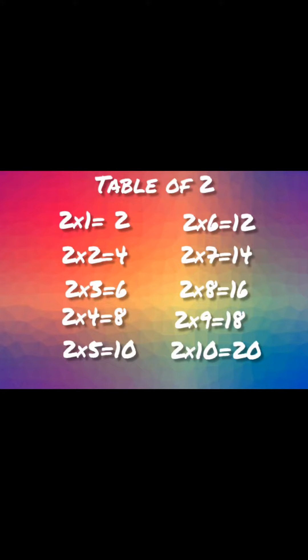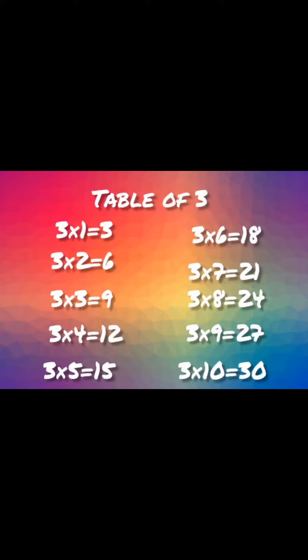Two sixes are twelve. Two sevens are fourteen. Two eights are sixteen. Two nines are eighteen. Two tens are twenty. Table of three.